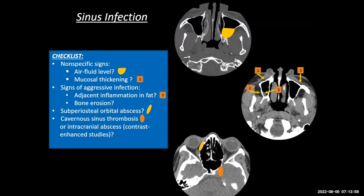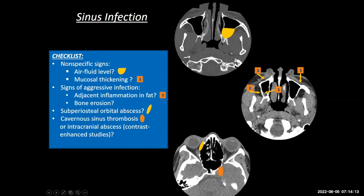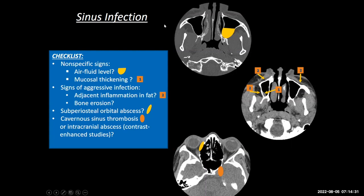Sinus infections can have nonspecific findings that may be present incidentally in any patient scanned for other reasons. For example, mucosal thickening — many patients scanned for any reason will have mucosal thickening of essentially no clinical significance. Air fluid levels are also common; maybe the patient had a recent cold, and that's not what they're looking for. An air fluid level could clue you in that some inflammatory process is present, but it's not necessarily indicative of an acute severe infection.